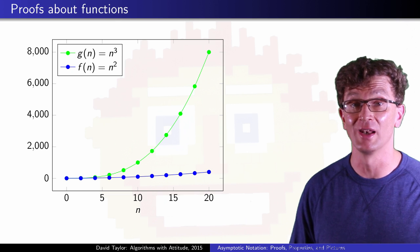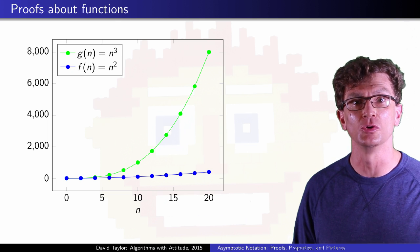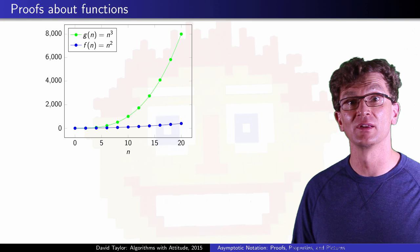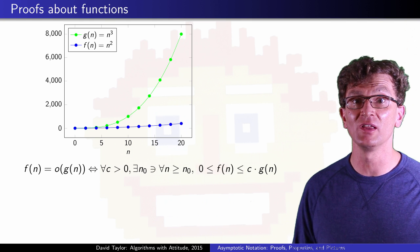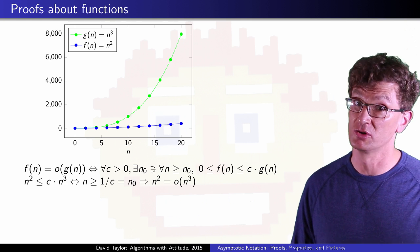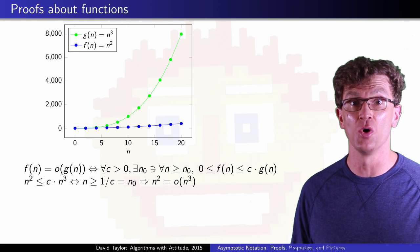I'll start with the almost trivial proof that n squared is little o of n cubed. For that, I'll go right to the definition of little o, and we see that for n greater than or equal to 1 over c, which is our n0, the definition holds. Done.